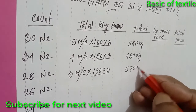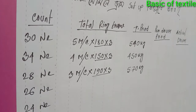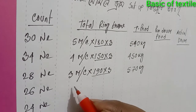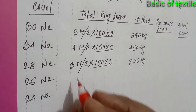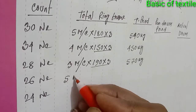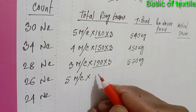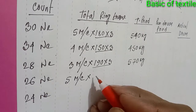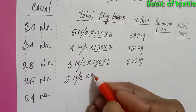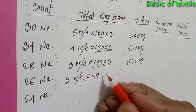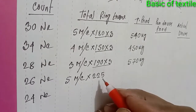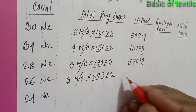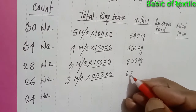Production will be 570 kg. Next, 26 count — for 26 count, suppose 5 machines, into 8 hours. 1 machine for 26 count production will be 225 kg. 225 into 3 — that means production will be 675 kg.